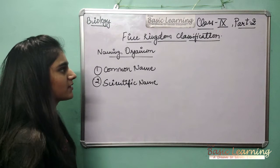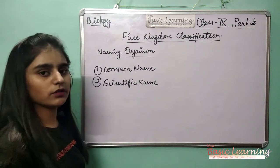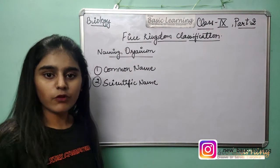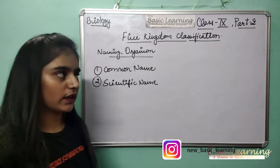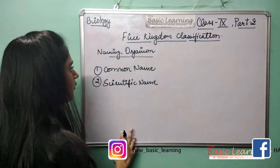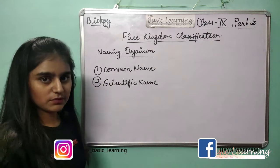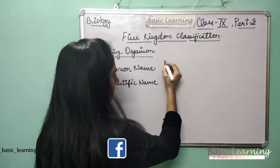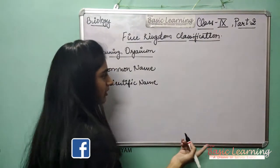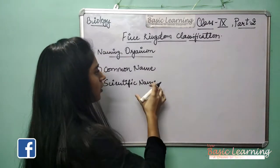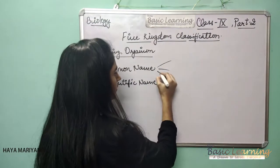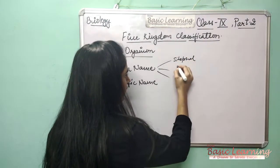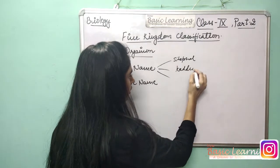Now let's start about five kingdom classification Part 2. In this part we are going to learn about how to name an organism, why we need to name an organism, and what is the use of naming an organism. First we will learn about common names and scientific names. For example, pumpkin — common names for pumpkin are sitafal, kaddu, or karshifal.